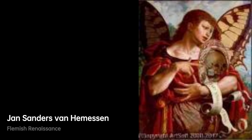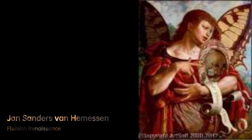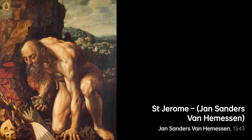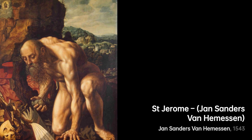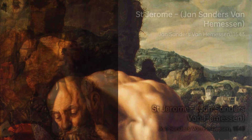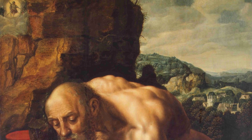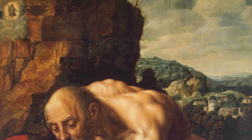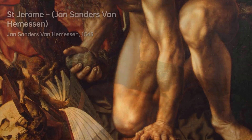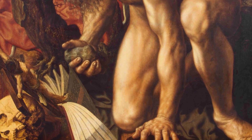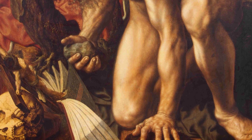Van Hemessen's artistic journey took him to Italy in the 1520s and to Fontainebleau near Paris in the mid-1530s. During these visits, he had the opportunity to observe and be inspired by the works of Italian artists at the First School of Fontainebleau, who were creating decorations for the Palace of Fontainebleau. Van Hemessen demonstrated his ability to interpret Italian models by incorporating them into a new Flemish visual style.